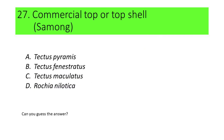Number 27. This species is commonly called commercial top or top shell. Locally, this is called samong. A. Tectus pyramis, B. Tectus fenestratus, C. Tectus maculatus, and D. Trochus nilotica. Can you guess the answer?